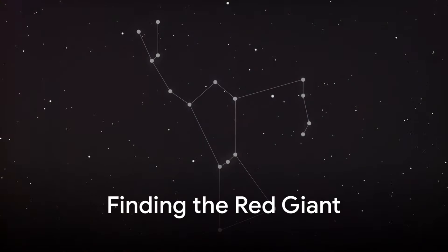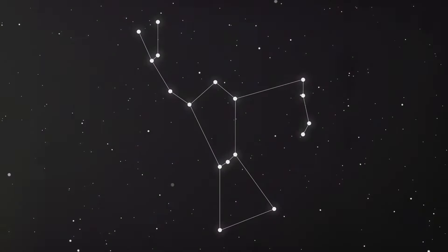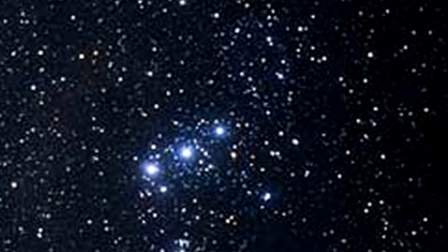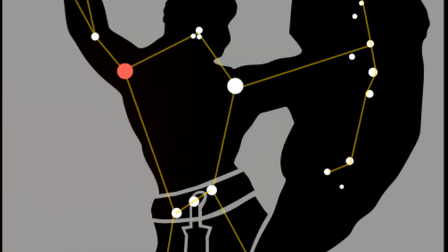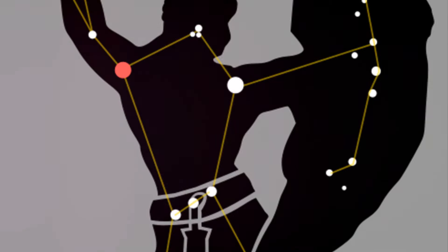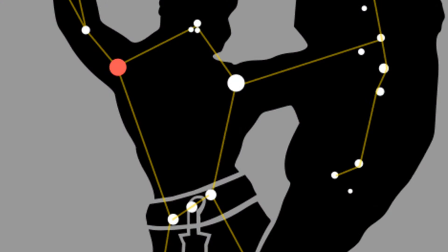So, where do we find this celestial giant? Well, it's easier than you might think. Look up and find the constellation Orion, the hunter. Orion is easily recognizable by his belt, three stars aligned in a row. You'll find Betelgeuse marking Orion's right shoulder. It stands out with its distinct reddish hue, a stark contrast to the cooler blue-white stars surrounding it. This color is a telltale sign of its advanced age and impending fate.